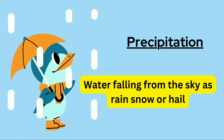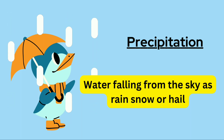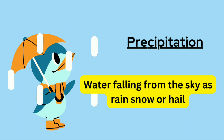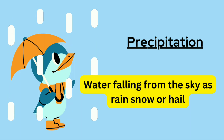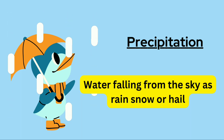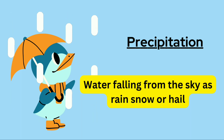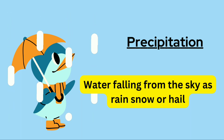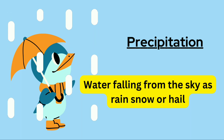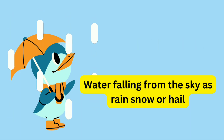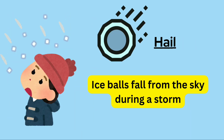Precipitation: water falling from the sky as rain, snow, or hail.